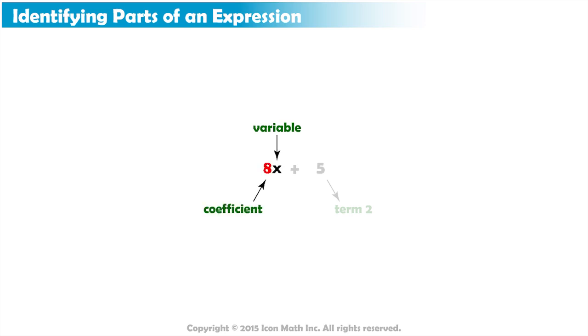8 is a coefficient of x. The second term, 5, is just a number. A term that has only a number is called a constant.